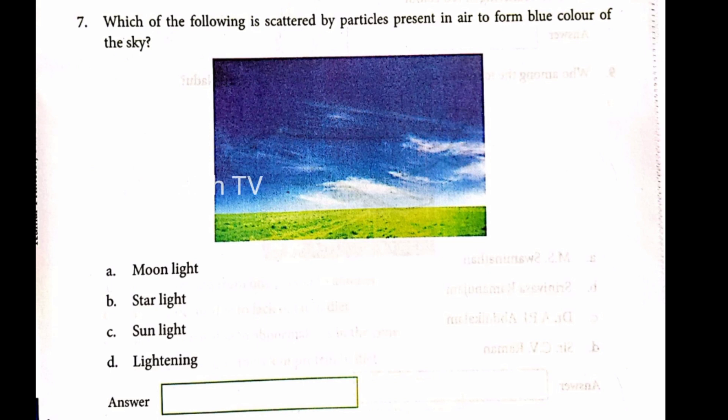Question 7. Which of the following is scattered by particles present in air to form the blue color of the sky? The answer is D. Sunlight.